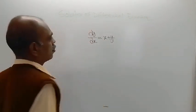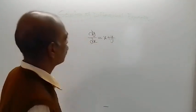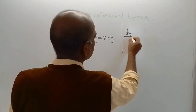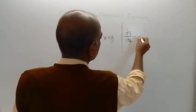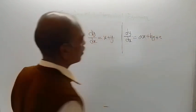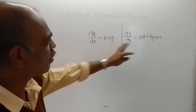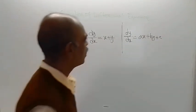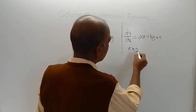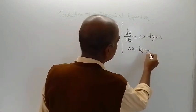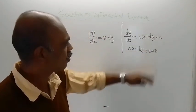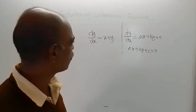If the form of the equation is like this — dy/dx equals ax plus by plus c — if this be the form of the given differential equation, then in that case our substitution is: let ax plus by plus c be equal to z. If you assume this way, then the differential equation can be solved.